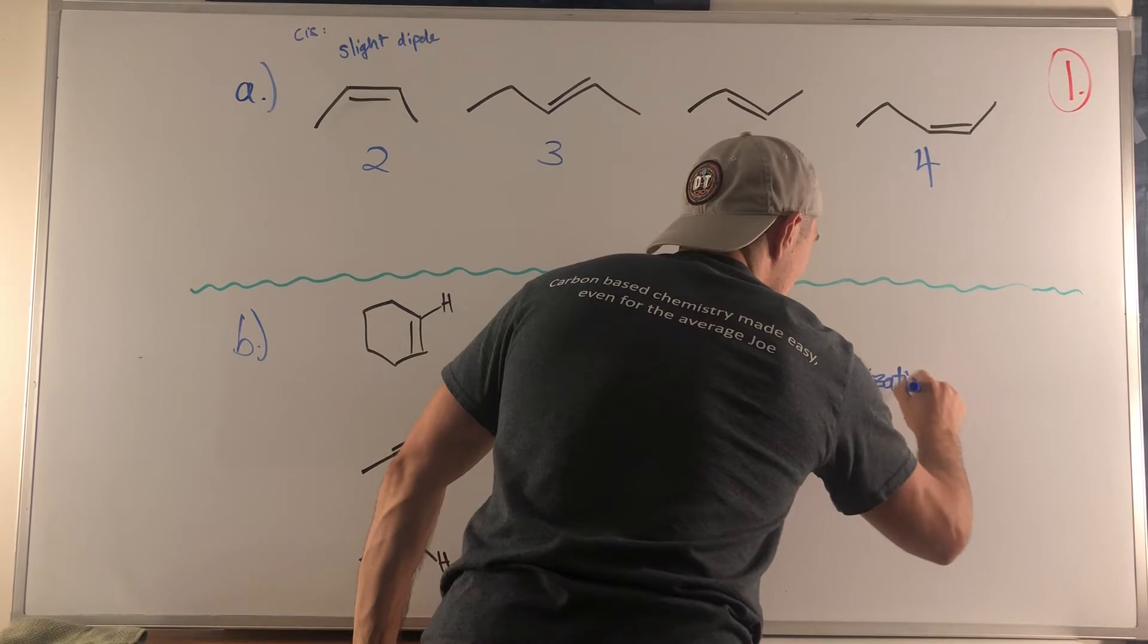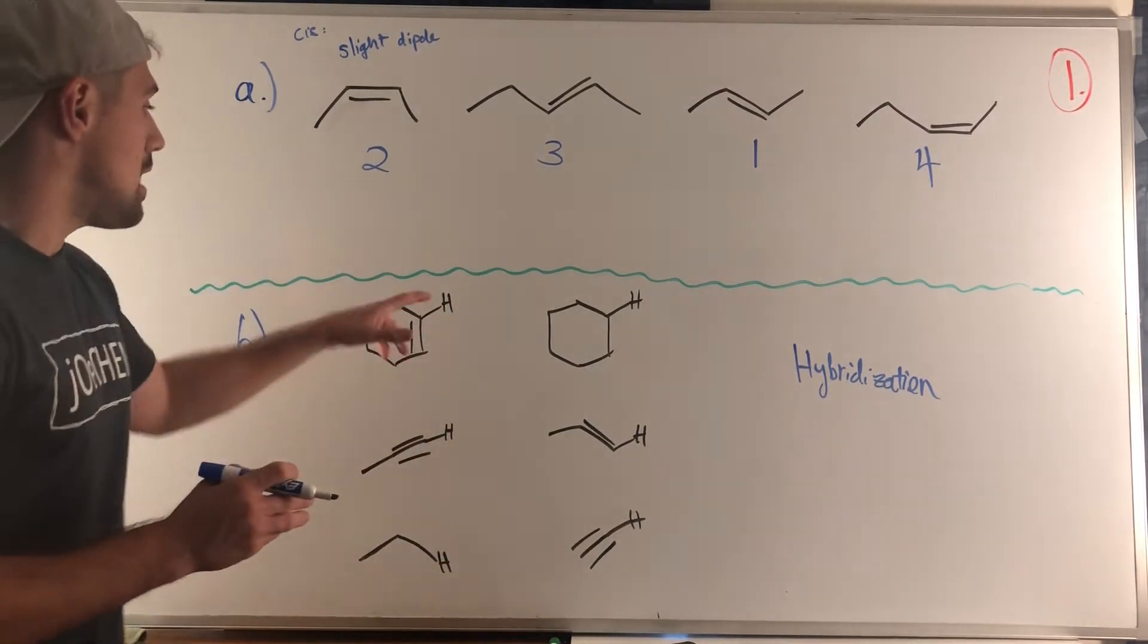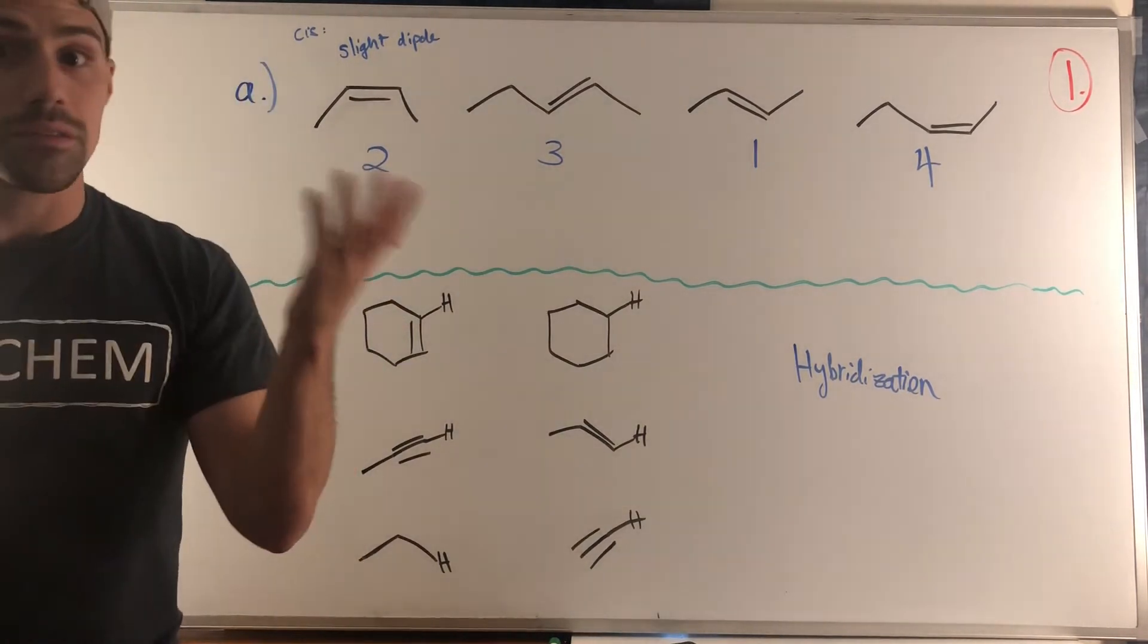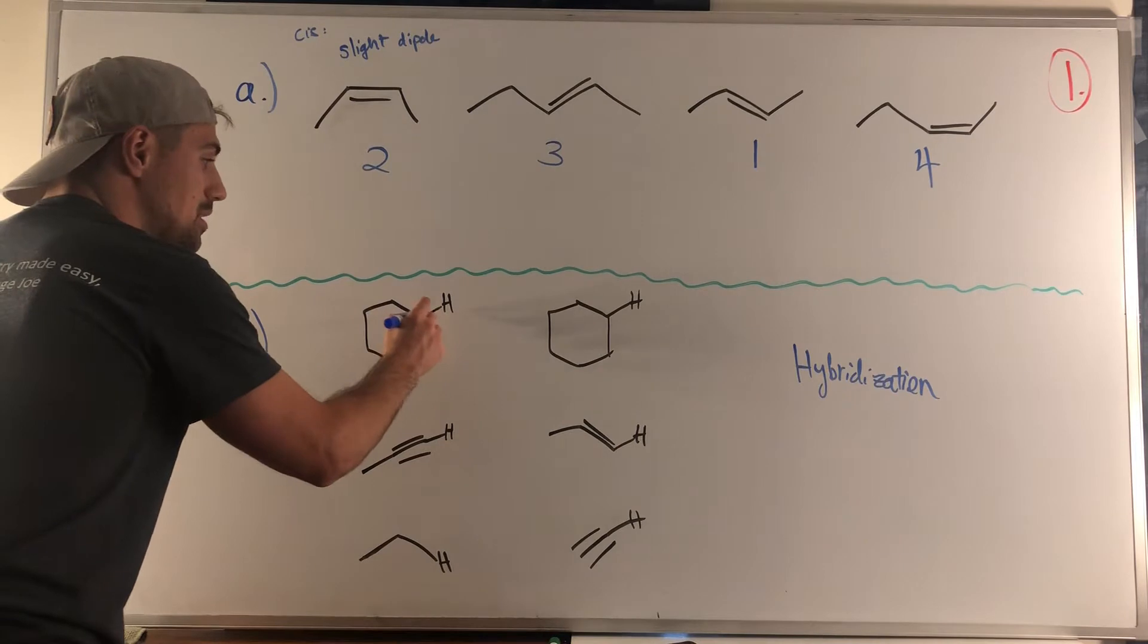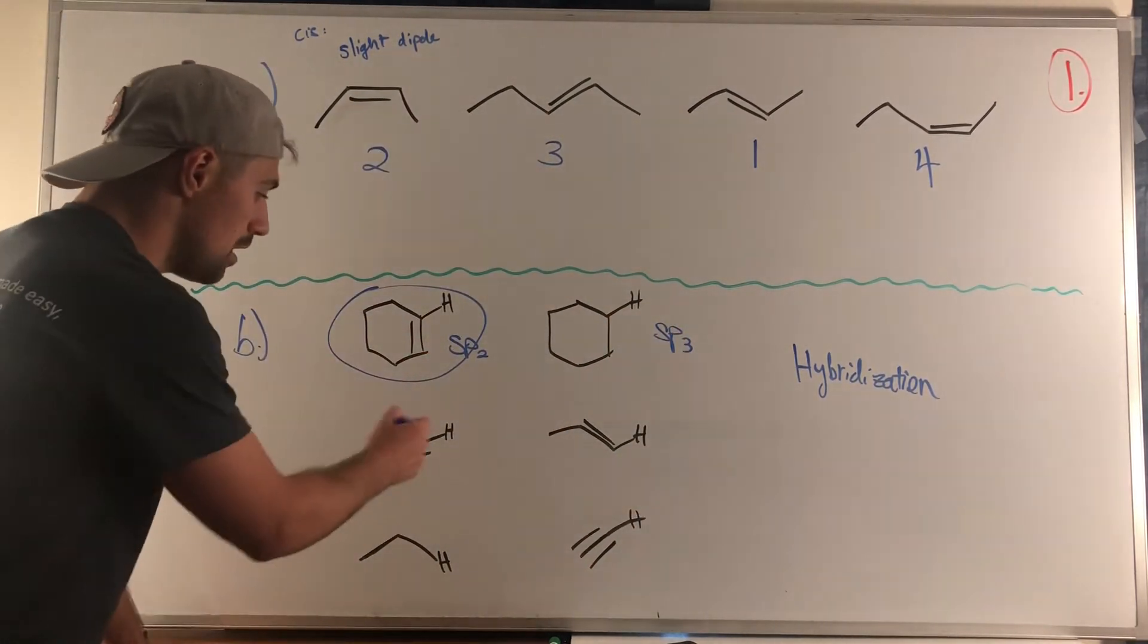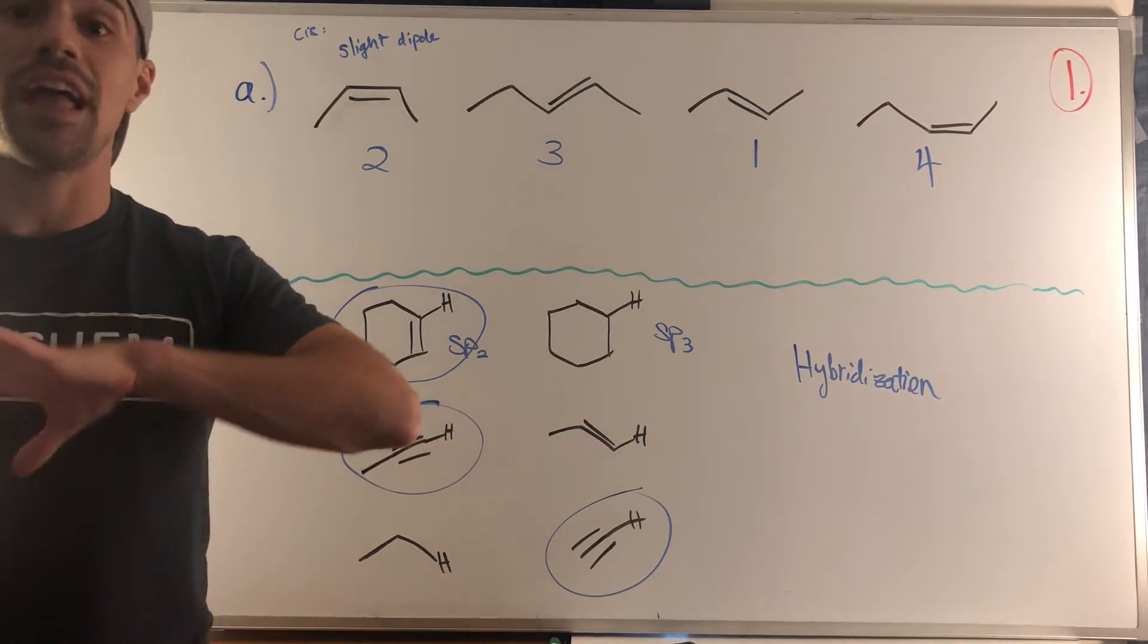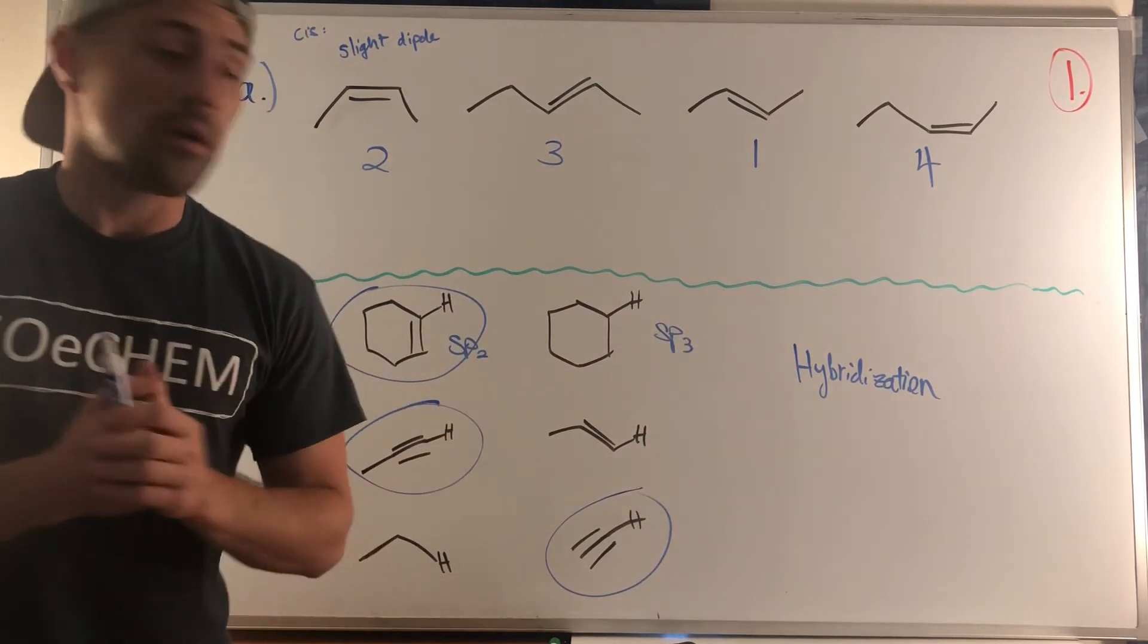This is a hybridization thing. Things that have more s character are more acidic in terms of hydrogens, because the conjugate base of this structure would have an electron pair residing in an orbital with more s character. The more s character you have, the closer that orbital is to the nucleus, and what lives in the nucleus? Protons. That helps stabilize the electron pair that has just been dumped by something abstracting a proton. This is an sp2 carbon, so because sp2 has more s character than sp3, the more acidic hydrogen is right here in this molecule. We have sp versus sp2 here, and sp versus sp3 here.